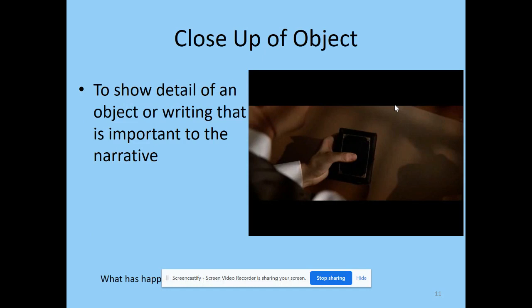Sometimes a close-up within a sequence can be of an object. This tells us that the object has a lot of importance within the scene or film — it could be the item the main character is searching for, or something with significant information for the audience, such as a close-up of a newspaper where we might be able to pick out the headline, giving us more information to help tell that narrative and story.